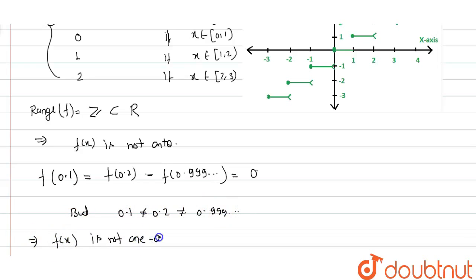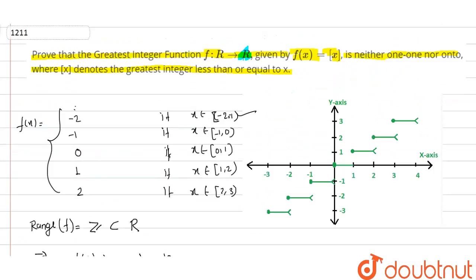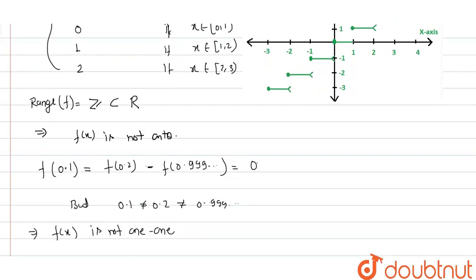Therefore, the greatest integer function is neither one-one nor onto. Thank you, enjoy learning.